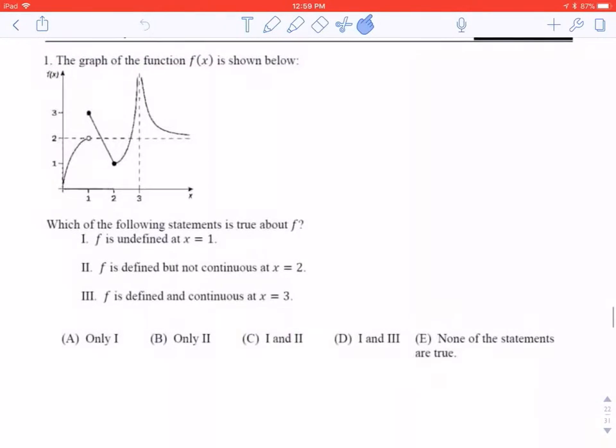Alright, we got the graph of the function f of x has shown. Which of the following statements is true about f? I'm just going to look at each of these individually. f is undefined at x equals 1. That is false. It's defined right there, so that's not correct.